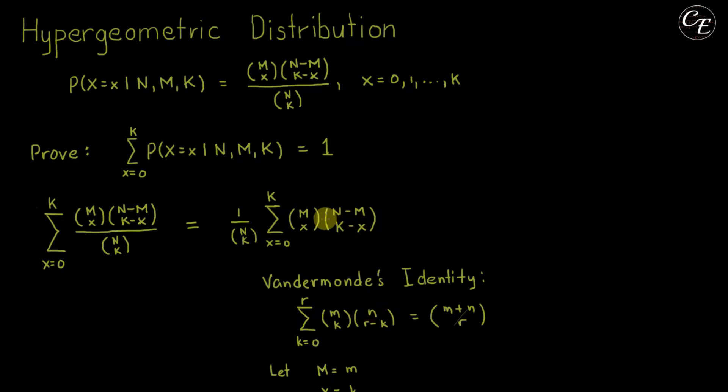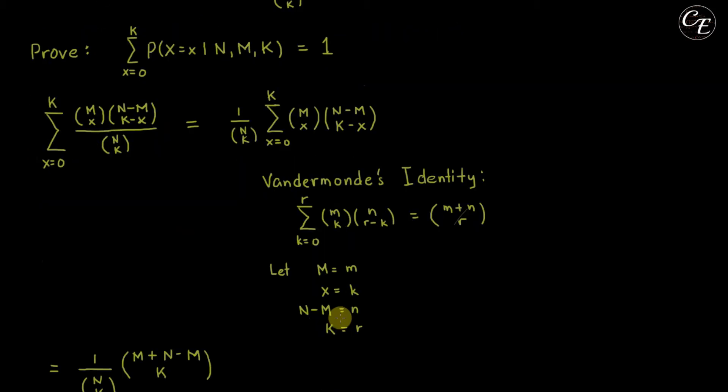We can make this one same with this one by letting this capital M equal to this small m. Small x to be equal to this small k. Capital N minus capital M to be equal to this small n, and capital K to be equal to r.